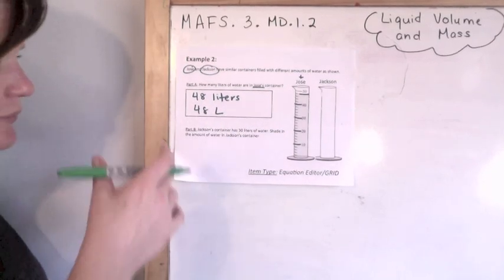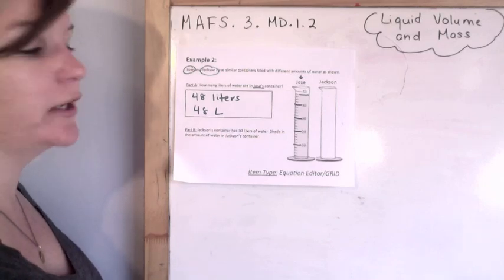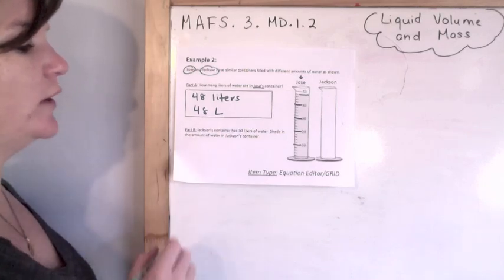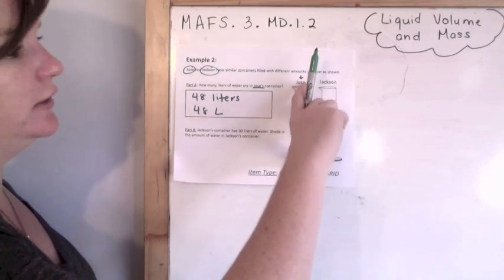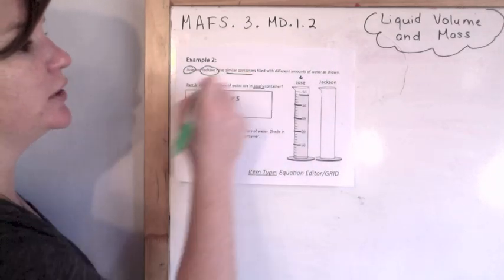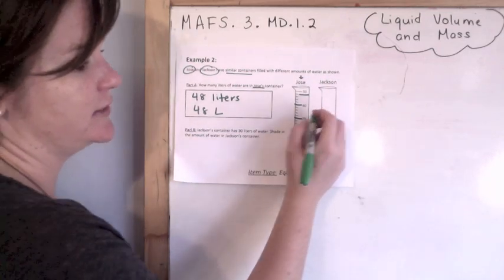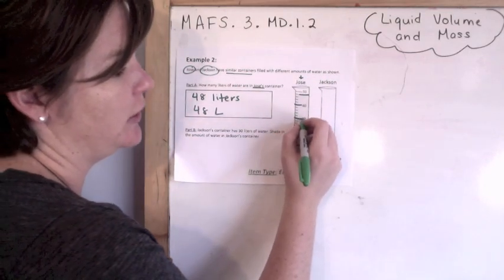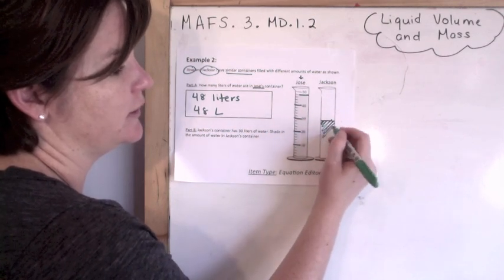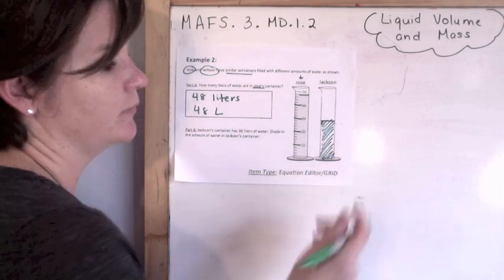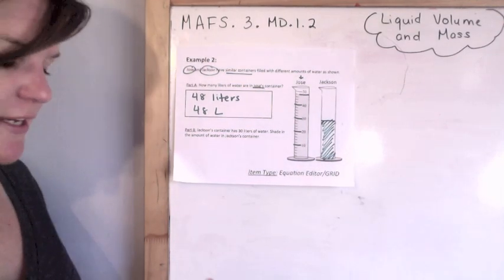Now for Part B, Jackson's container has 30 liters of water — shade in the amount of water in Jackson's container. We're using Jose's container because we know that they are similar containers to determine where we shade Jackson's container. So here's 30 — all I've got to do is shade this in. I don't know how they're going to grade this, but that's how you would do it.